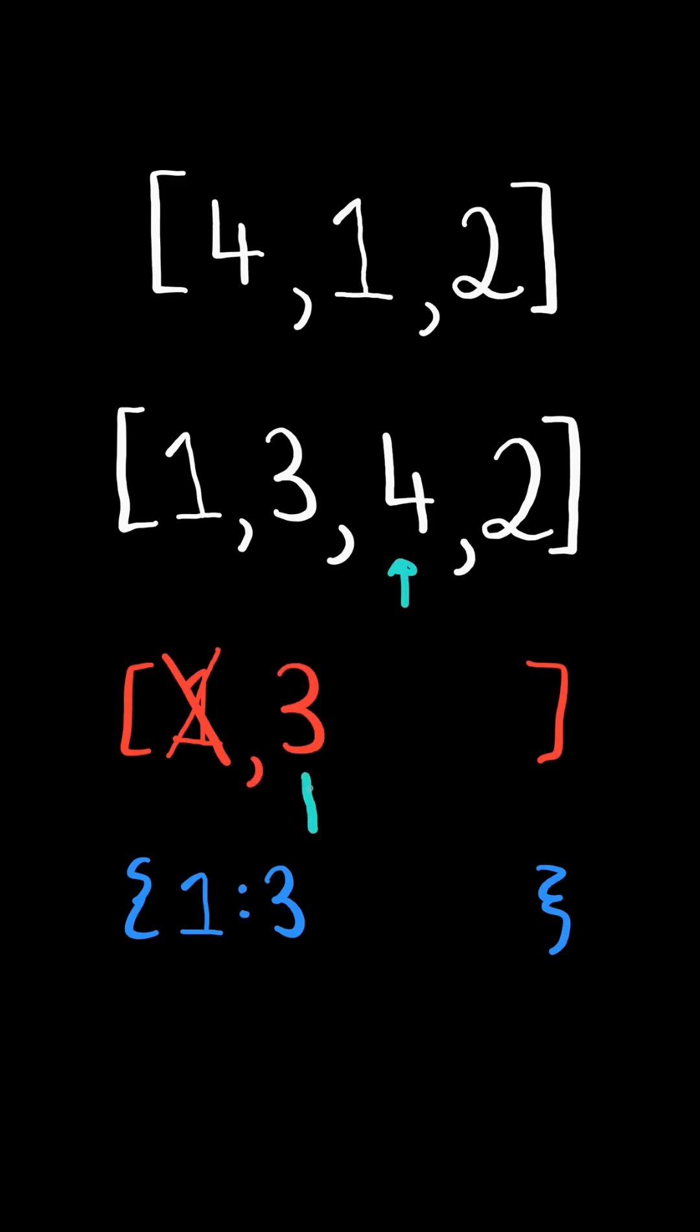Now again, the current number is greater than top of stack, so the next greater element of 3 is 4. And so we pop 3 and append the current number.